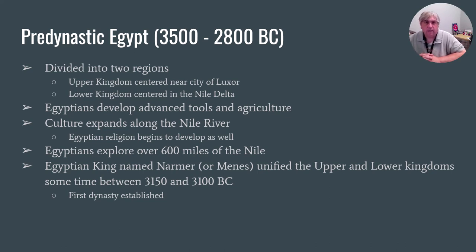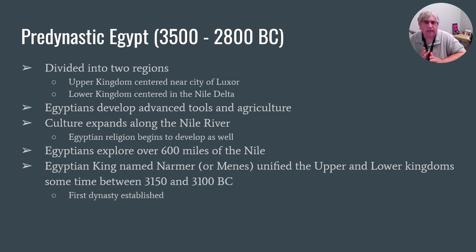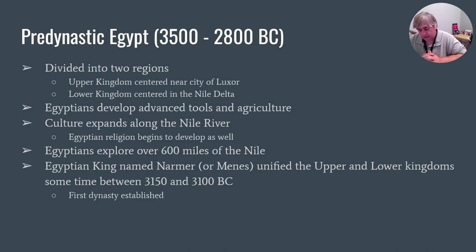Pre-dynastic Egypt is basically 3500 to 2800 BC. During this time there are different kingdoms — the upper kingdom and the lower kingdom — and Egypt is going to get its feet wet and become a thing. The Egyptian culture and way of life are going to be created. The Egyptians explore along the river, and finally somewhere around 3100 BC, a man named Menas or Narmer is going to unite the two kingdoms together and we get our first Egyptian dynasty. We used to think Narmer was legendary, but recently, in probably the last 15 years or so, evidence of Narmer's existence has been proven.